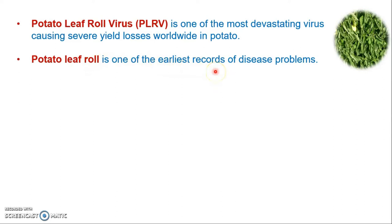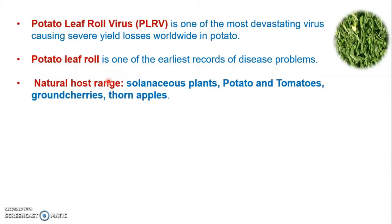Potato Leaf Roll Virus has one of the earliest records of disease problems. Its natural hosts are solanaceous plants; among these, potatoes are severely infected and tomatoes are also heavily affected. Apart from potato and tomato, this virus also infects weeds such as ground cherries and thorn apples.